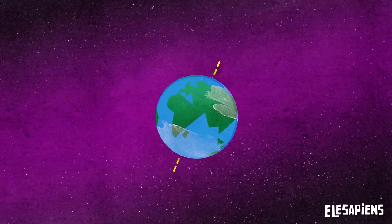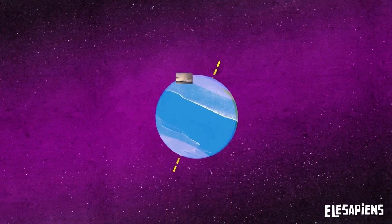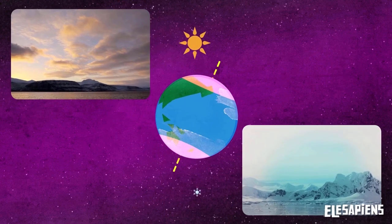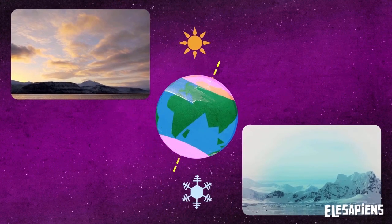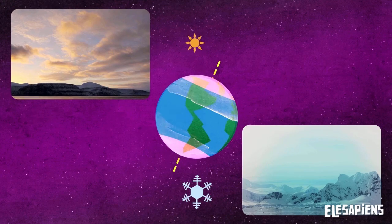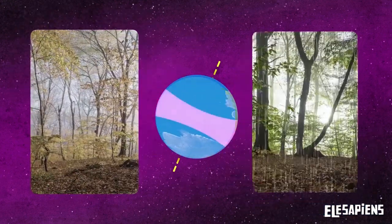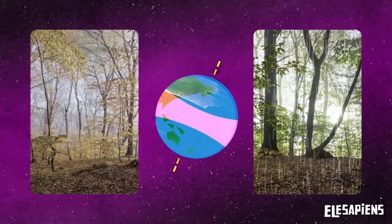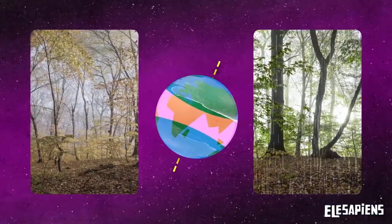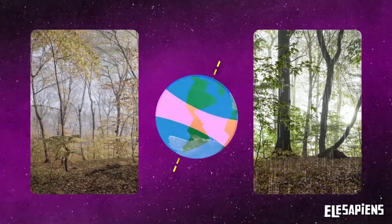But not all of the planet experiences the four distinct seasons. In the polar regions, there are only two: winter and summer. In the equatorial zone, there is a dry season and a wet season.